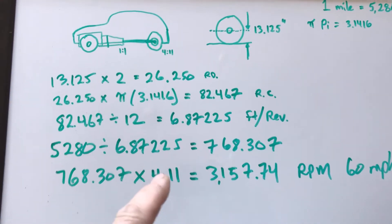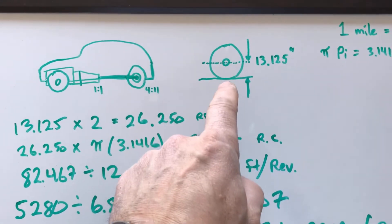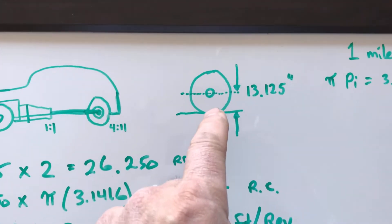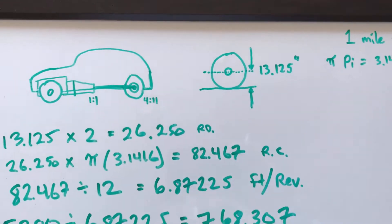Now if you've got different sized tires, this distance here is going to change. I happen to be running 6.00-16 bias plies. Different sized tires will change that.